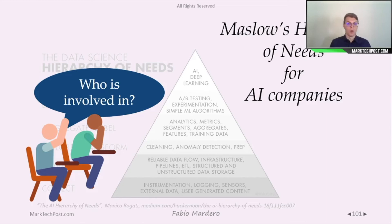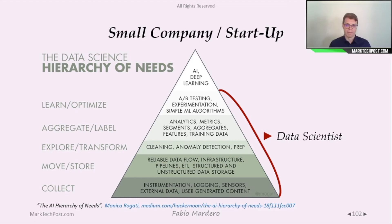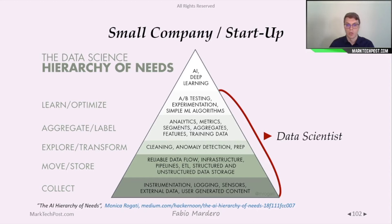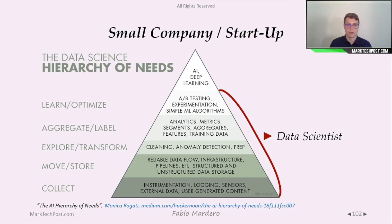But who is involved in this pyramid? In a small company or startup, all of these phases are done by a data scientist. Generally speaking, a small company needs to start small. If the company is not oriented toward deep learning development, it does not allocate resources to complex machine learning algorithms. So the data scientist is the only figure who collects, moves, and stores data, explores it, and then performs analytics or develops machine learning algorithms.